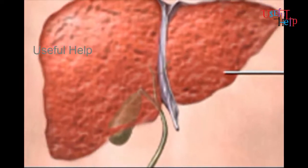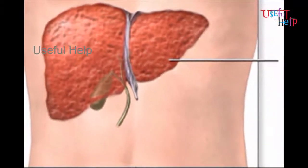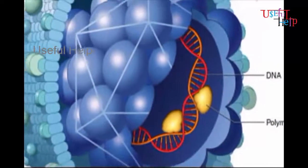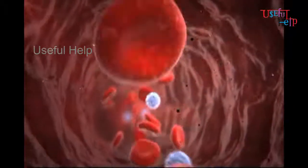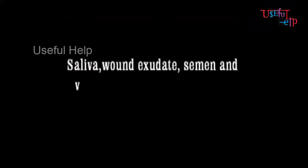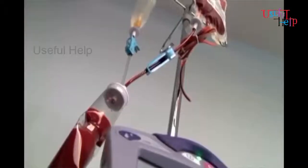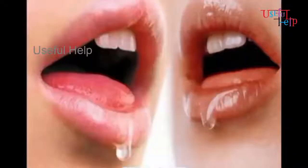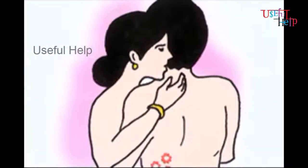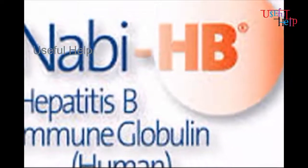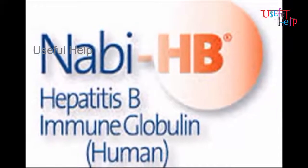Hepatitis B is related to liver infection or cirrhosis. It is caused by the hepatitis B virus, which is highly concentrated in blood. Other body fluids like saliva, wound secretions, semen, and vaginal secretions contain lesser amounts of the virus. It is transmitted by exposure to infected blood, body fluids, sexual contact, or drug abuse. A vaccine called hepatitis B immunoglobulin provides temporary protection for 3 to 6 months.